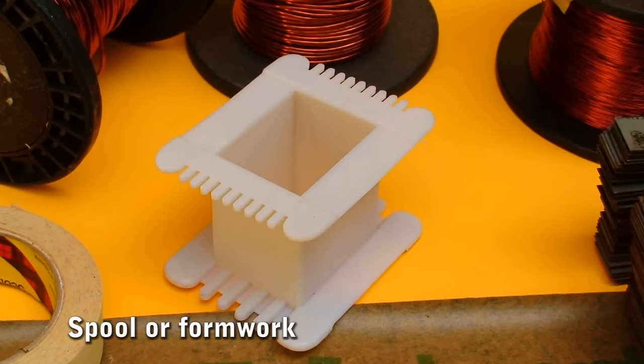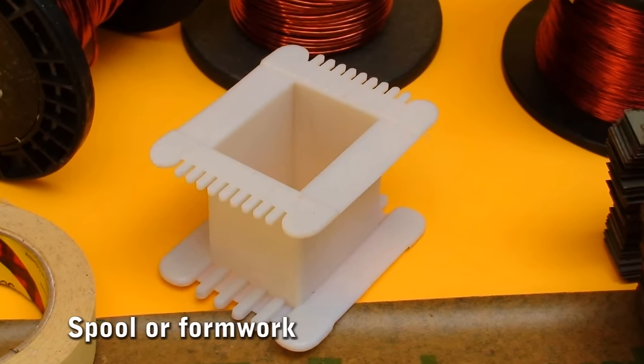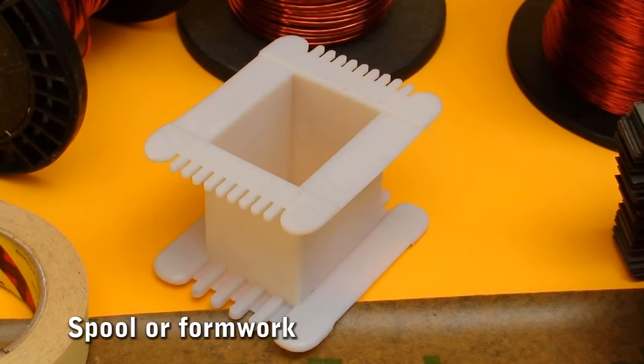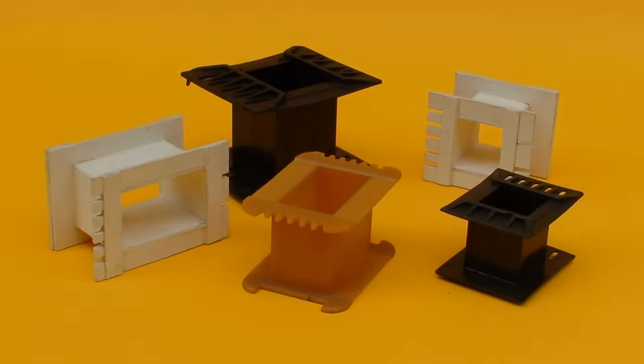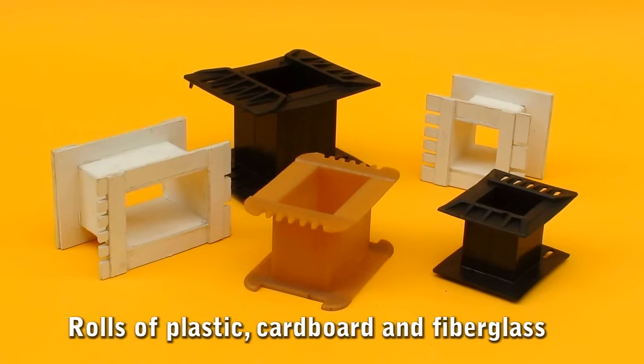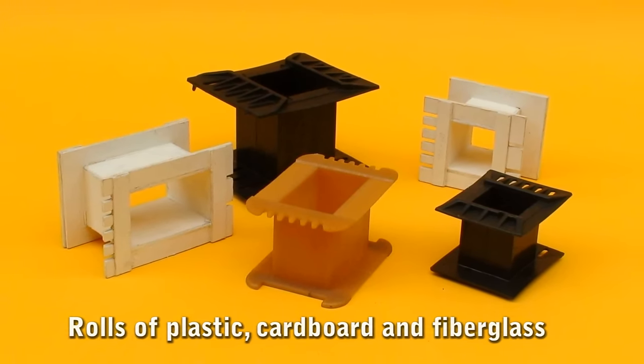Formwork. Square one reel is used as support for winding the wire and prevent spreading, helping the smooth narrowing of the wire. The formwork are available in various materials such as plastic, cardboard, and fiberglass.